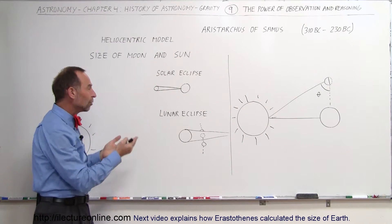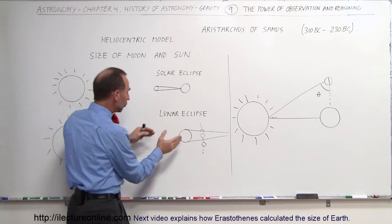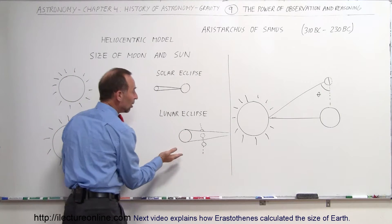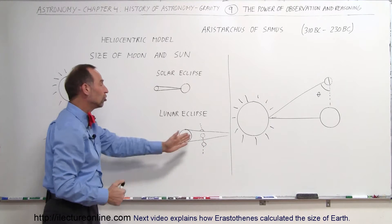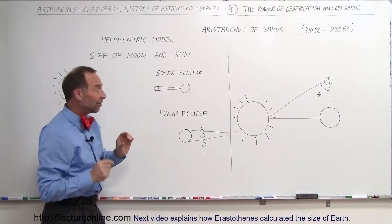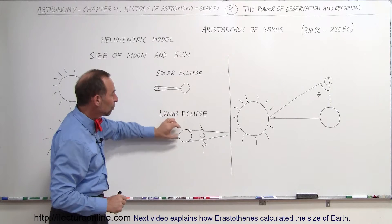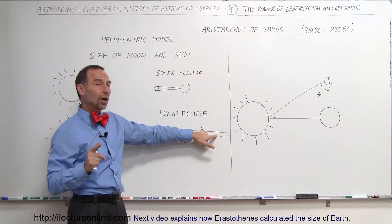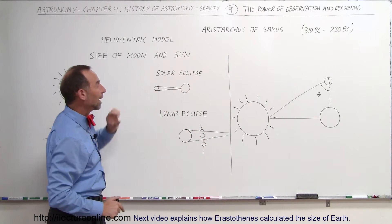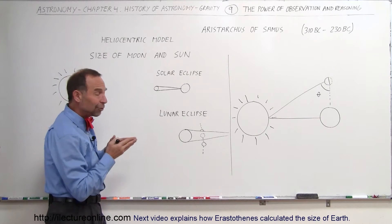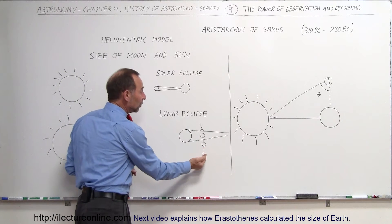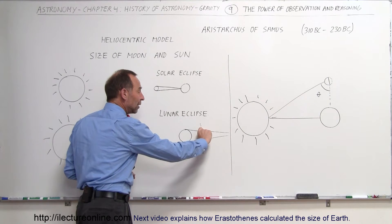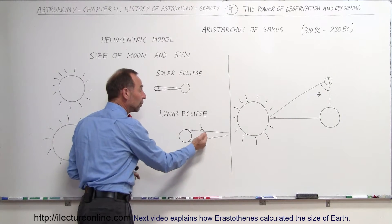Then he realized when there was a lunar eclipse, the Earth would also block the light in that direction, but now the Moon would disappear into the shadow of the Earth. He realized then that that taper, that angle, should be the same for the shadow cast by the Earth and the shadow cast by the Moon. But in this case, if the Earth was bigger, then when you go to the orbit of the Moon, the shadow would still be fairly wide and the Moon could then travel through and actually disappear.